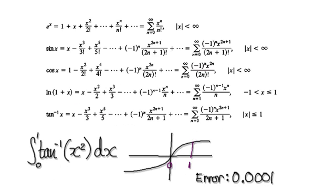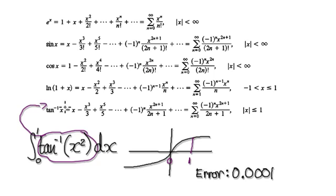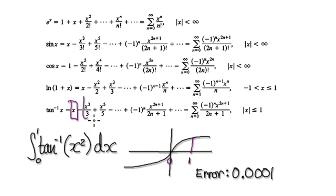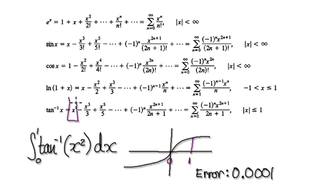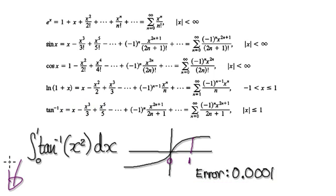Let's give you guys some more practice. Integrate inverse tan of x squared from 0 to 1 — find this area here. The thing is, you don't know how to integrate this directly, so turn it into a series and then integrate the series. The main question is: how many terms do you need in order to be sure that the area is within this level of accuracy? Press pause and have a go.